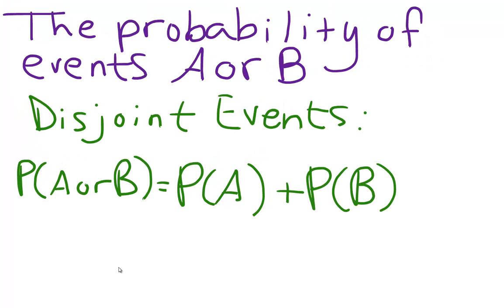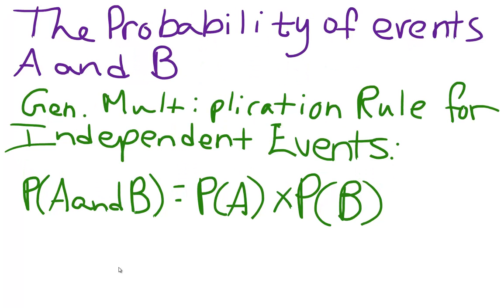The probability of events A or B — for disjoint events — the probability of A or B equals the probability of A plus the probability of B. The probability of events A and B uses the general multiplication rule for independent events: the probability of A and B equals the probability of A times the probability of B. When working with probabilities in general, an OR statement will refer to addition, while an AND statement generally refers to multiplication.